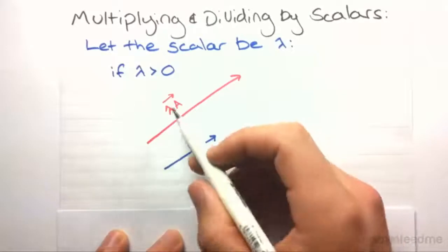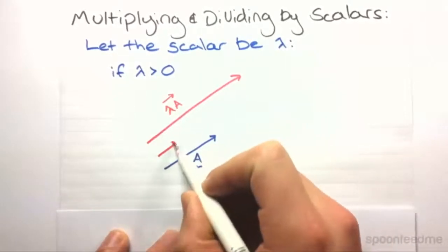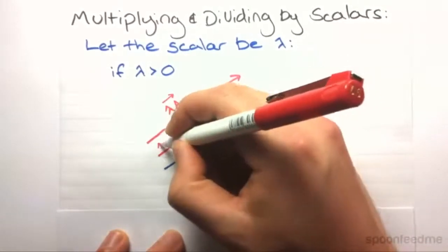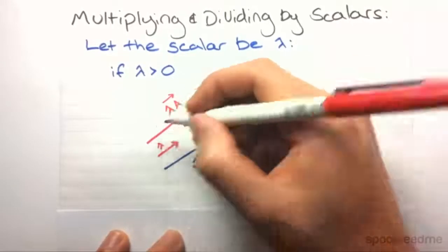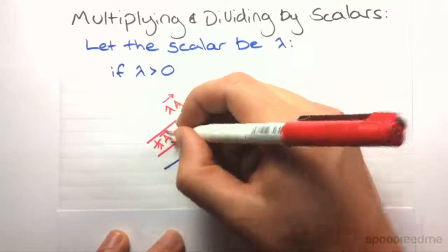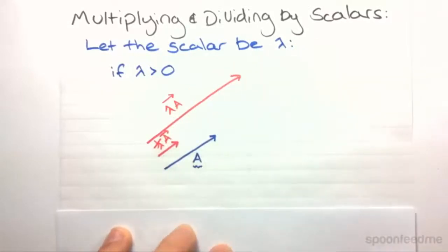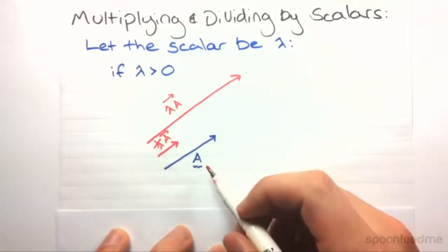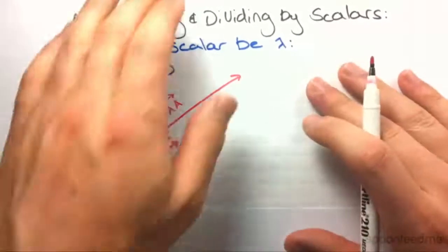So if we're dividing, it may look something like this. Now the magnitude is divided by lambda A. So that's what happens when lambda is greater than zero.